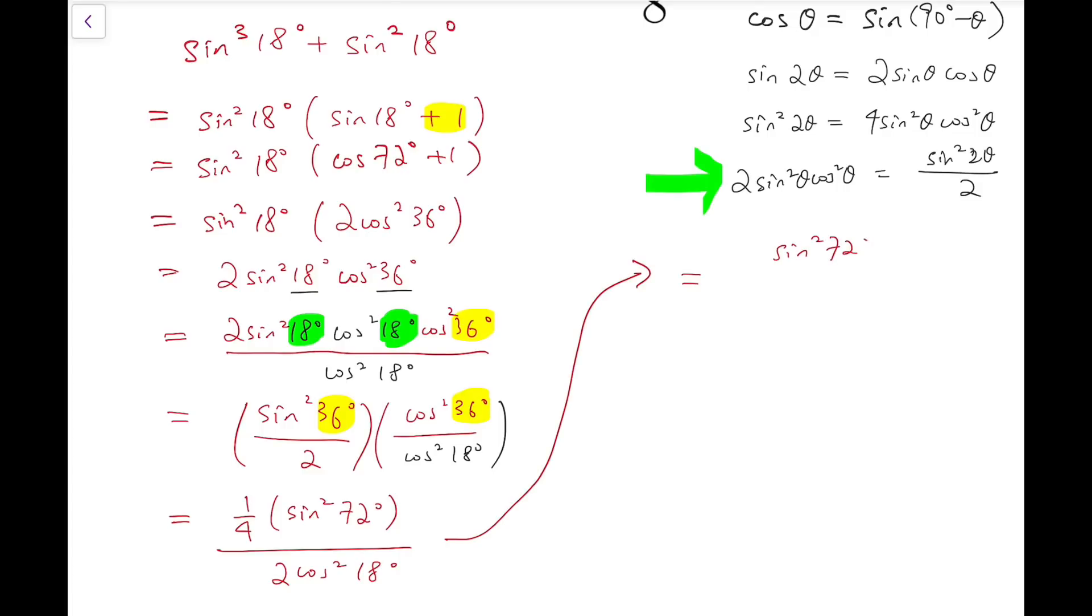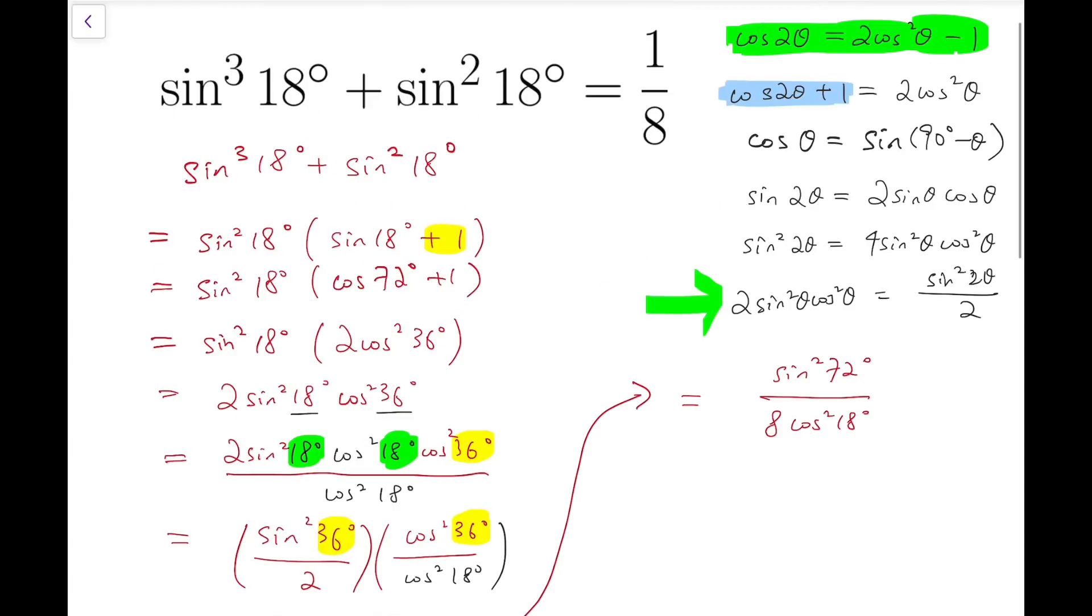So let's rearrange that. Now actually we are almost there. Sine squared 72 degrees over 8 cosine squared 18 degrees. Now recalling that we are actually aiming for 1 eighth. And we have the desired 8 at the bottom of the fraction.